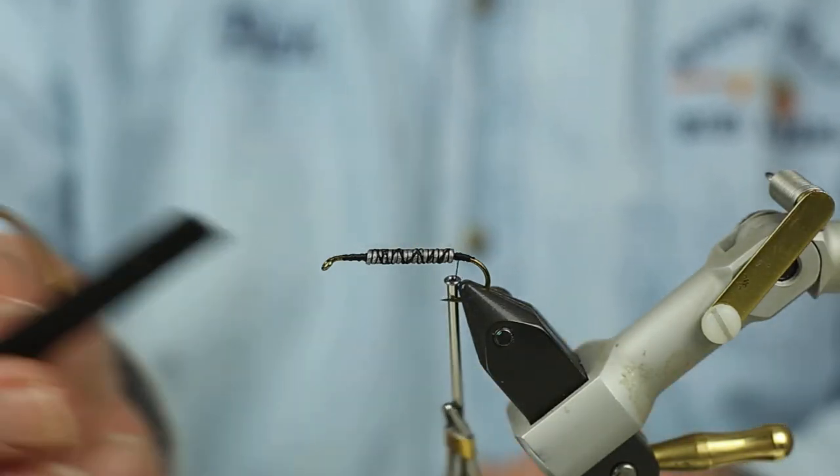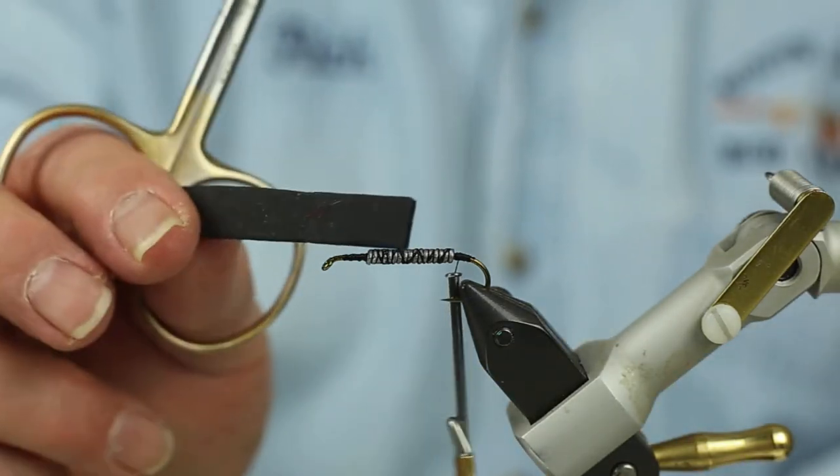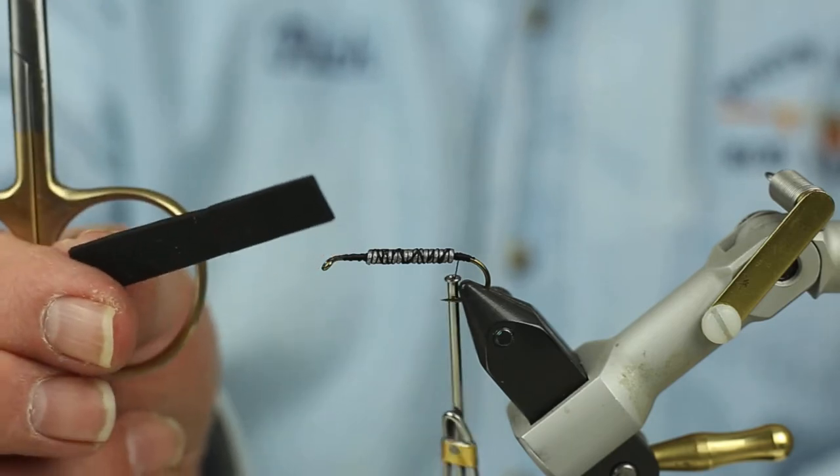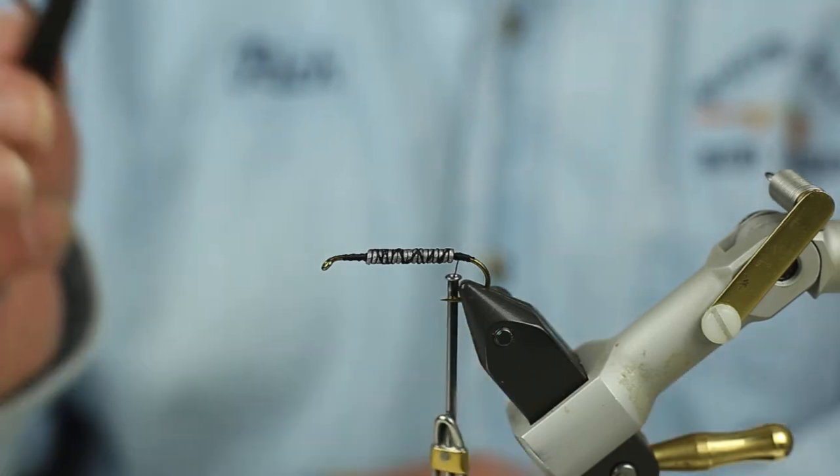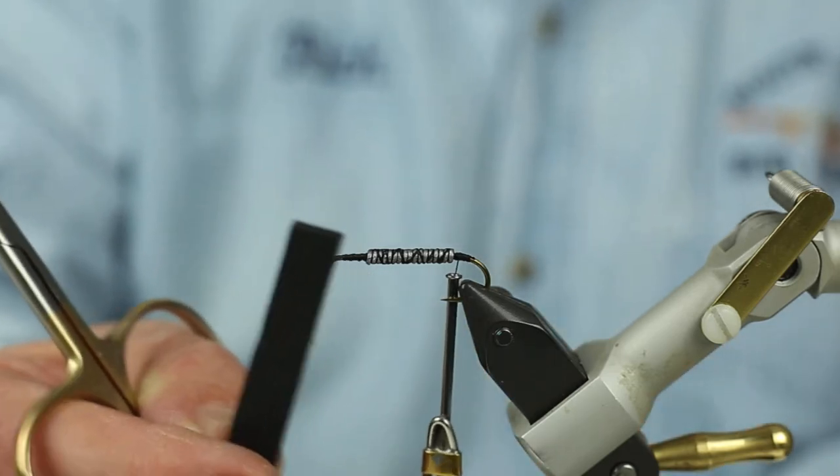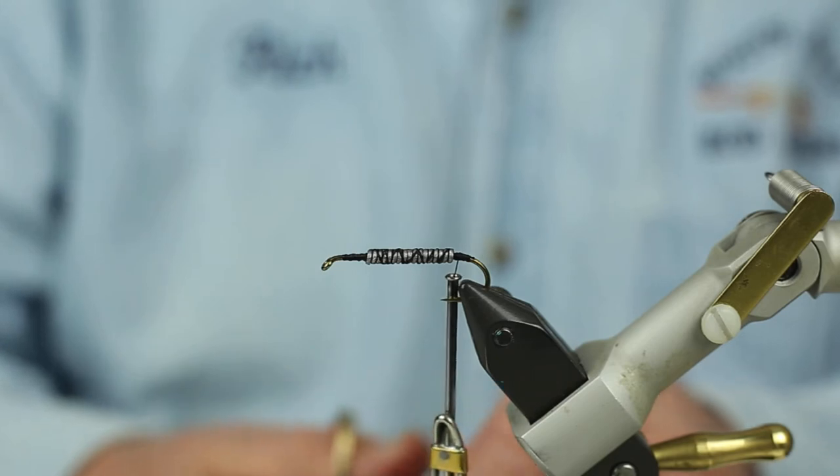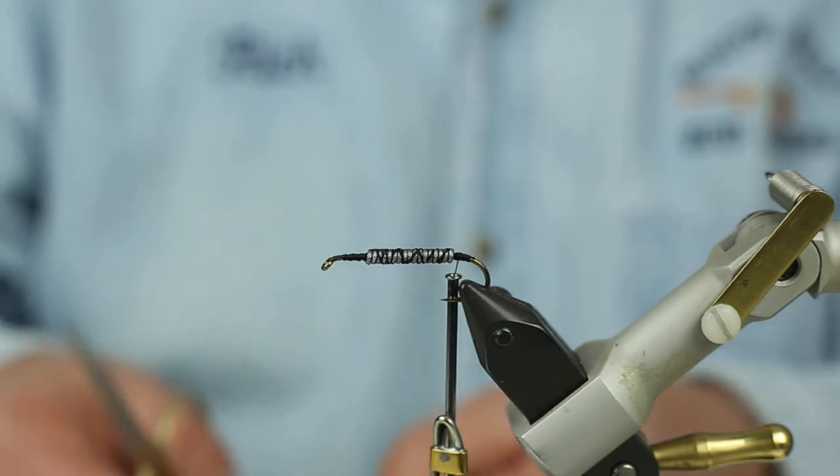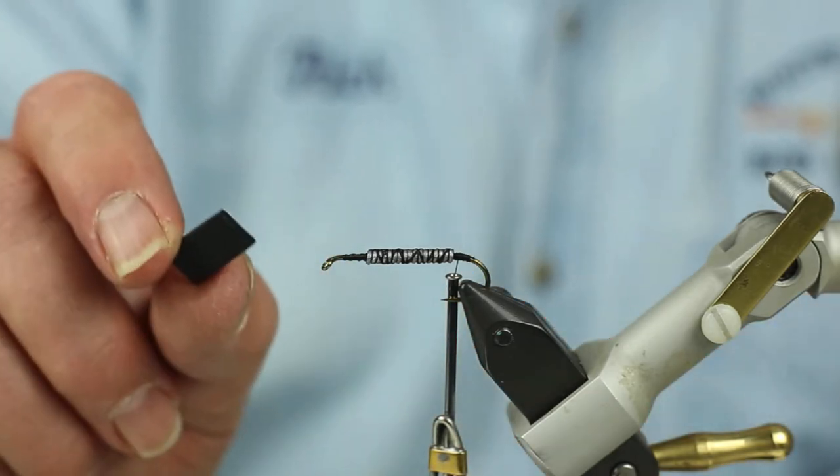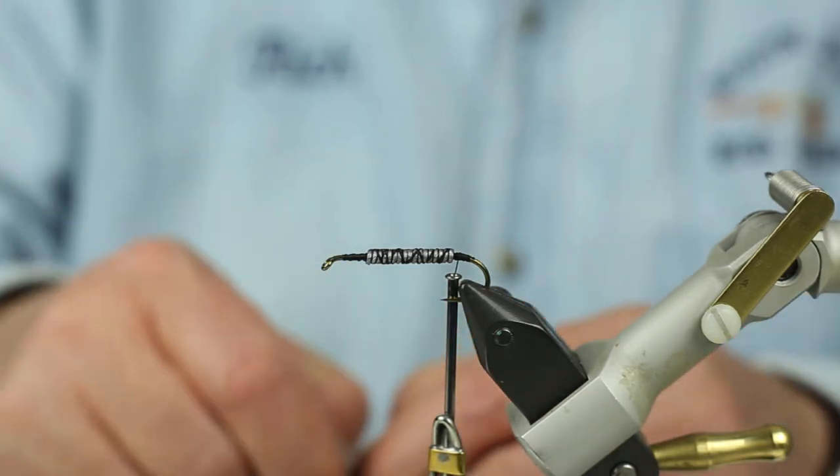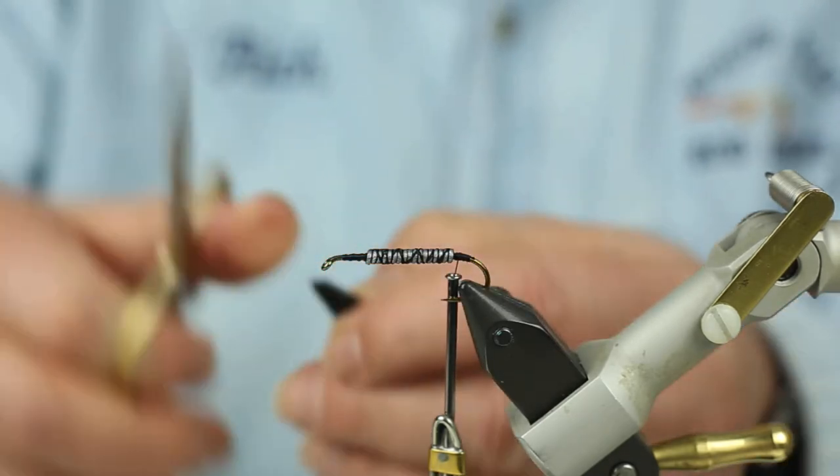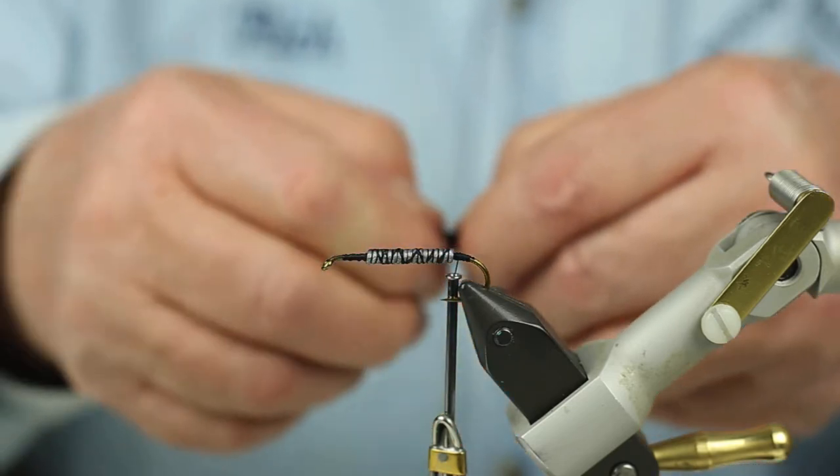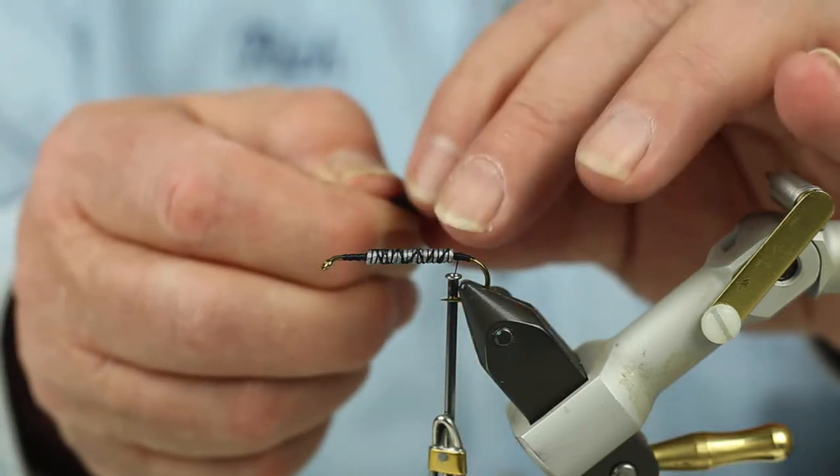I'm going to cover this up again and make a base down here all the way to the bend so that when I tie the tail in it's not going to spin around. I'm going to use foam on this. This is one-eighth inch black closed cell foam and I've cut about three-eighths of an inch width and I'm going to cut about maybe half an inch out of that. I'm going to make a triangle at the end that I tie in.